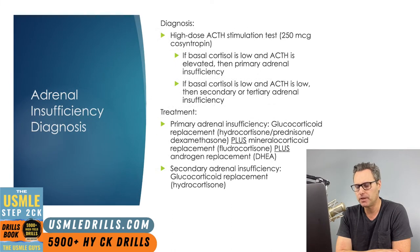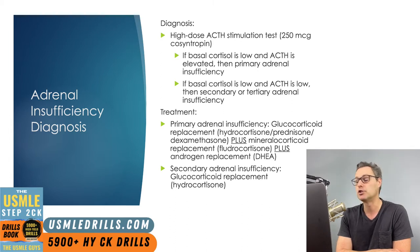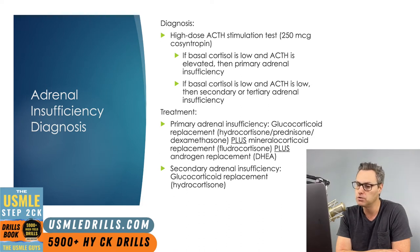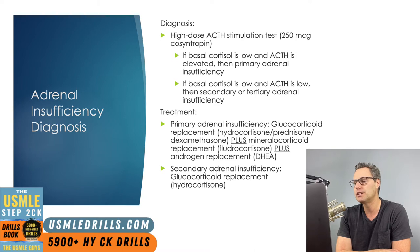We diagnose primary versus secondary based on ACTH levels, established using a high-dose ACTH stimulation test where the patient is given cosyntropin and basal cortisol and ACTH levels are measured. If basal cortisol is low and ACTH is elevated, then primary adrenal insufficiency is the cause. If basal cortisol is low and ACTH is also low, then we're dealing with either secondary or tertiary adrenal insufficiency.